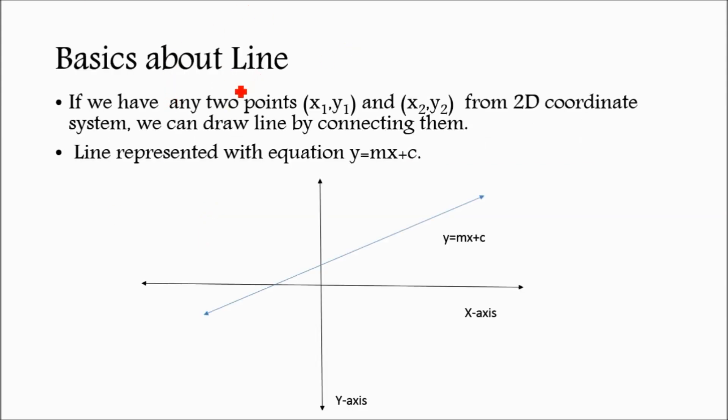First of all, what is a line? If I want to draw a line on paper and I know two points (x1, y1) and (x2, y2), I will just join them and draw the line. Line is represented with equation y equals mx plus c, where m is the slope and c is the y-intercept.